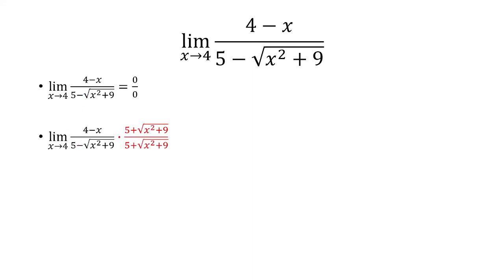The conjugate of the denominator is 5 plus the square root of x squared plus 9. And the denominator becomes the difference of two squares.